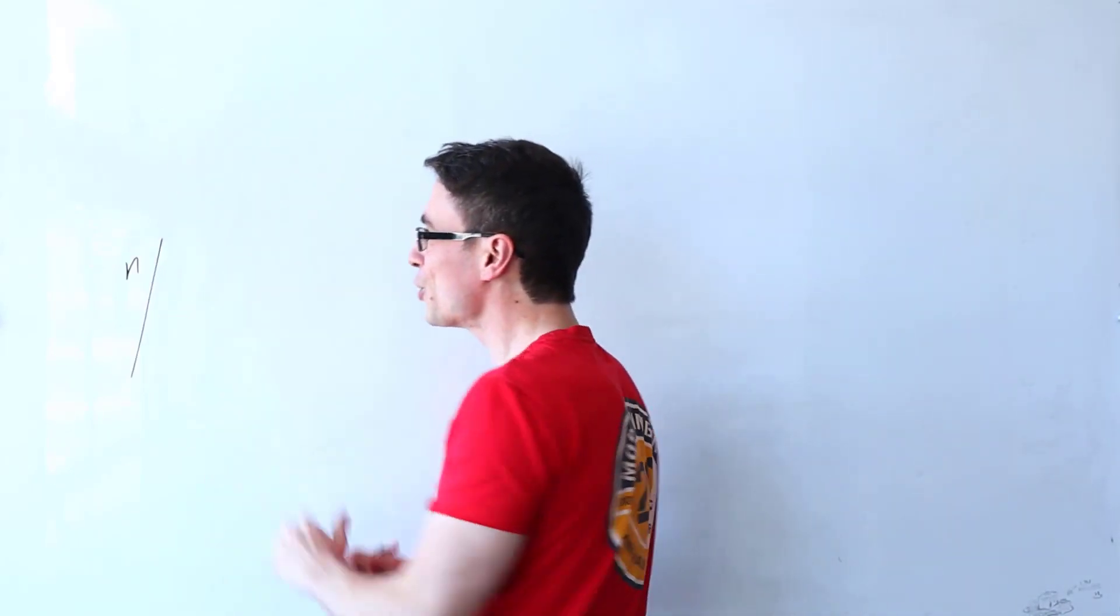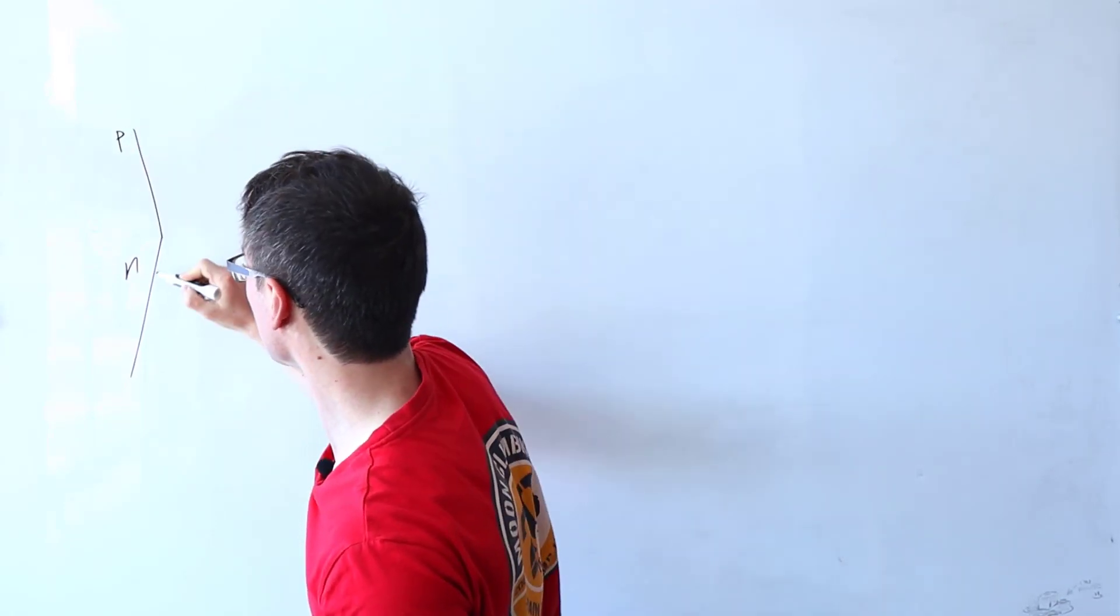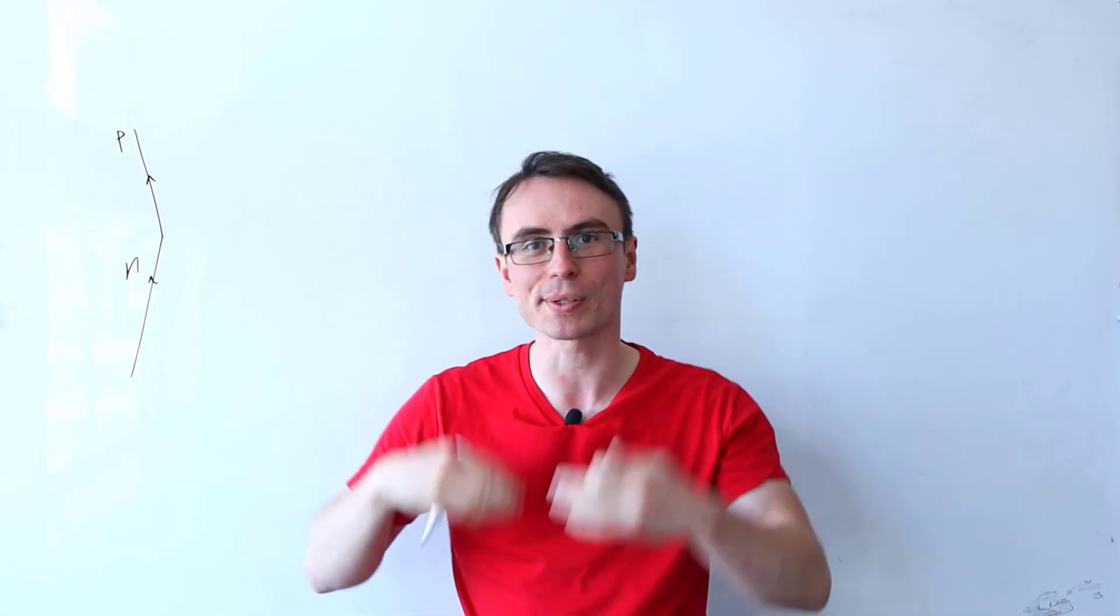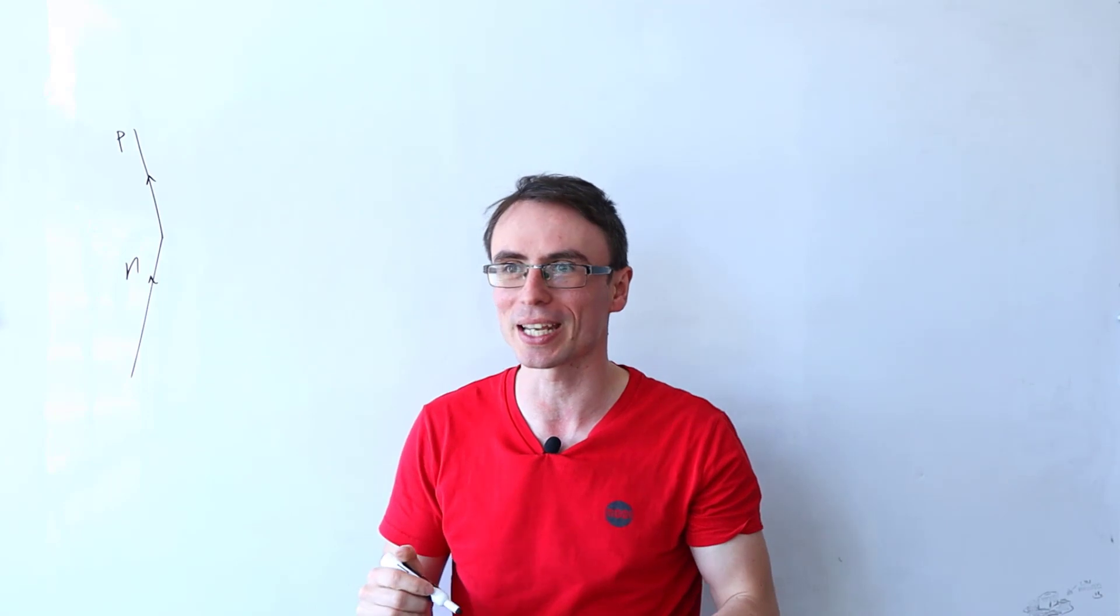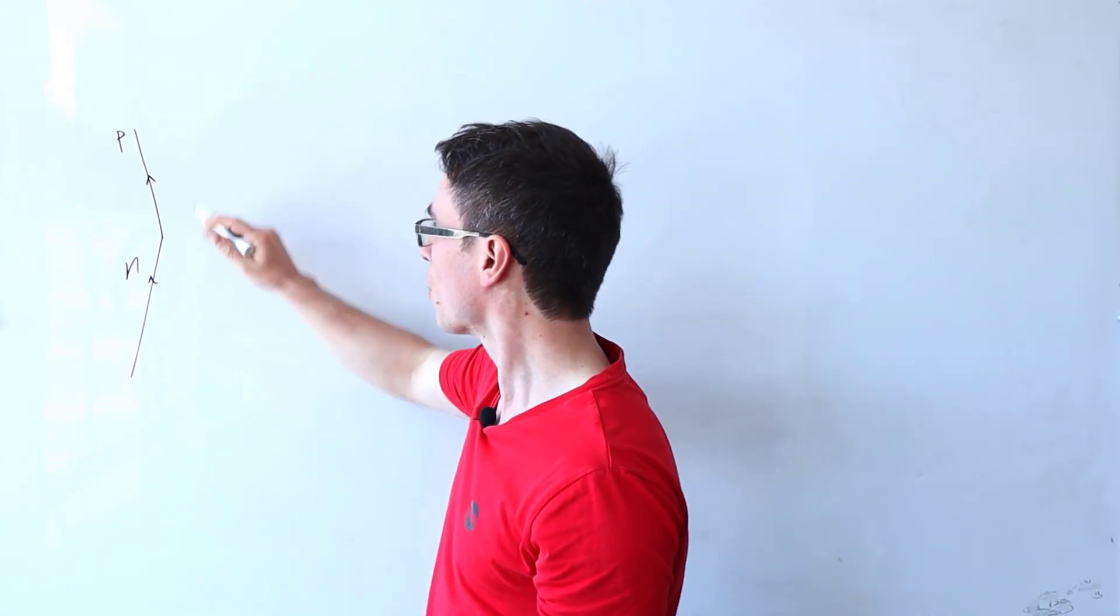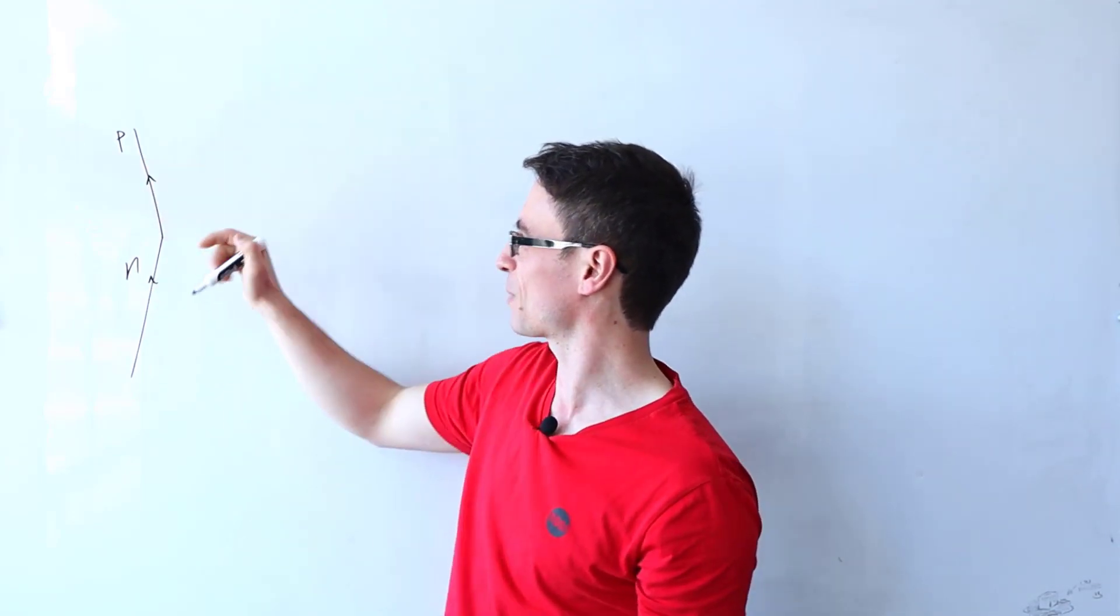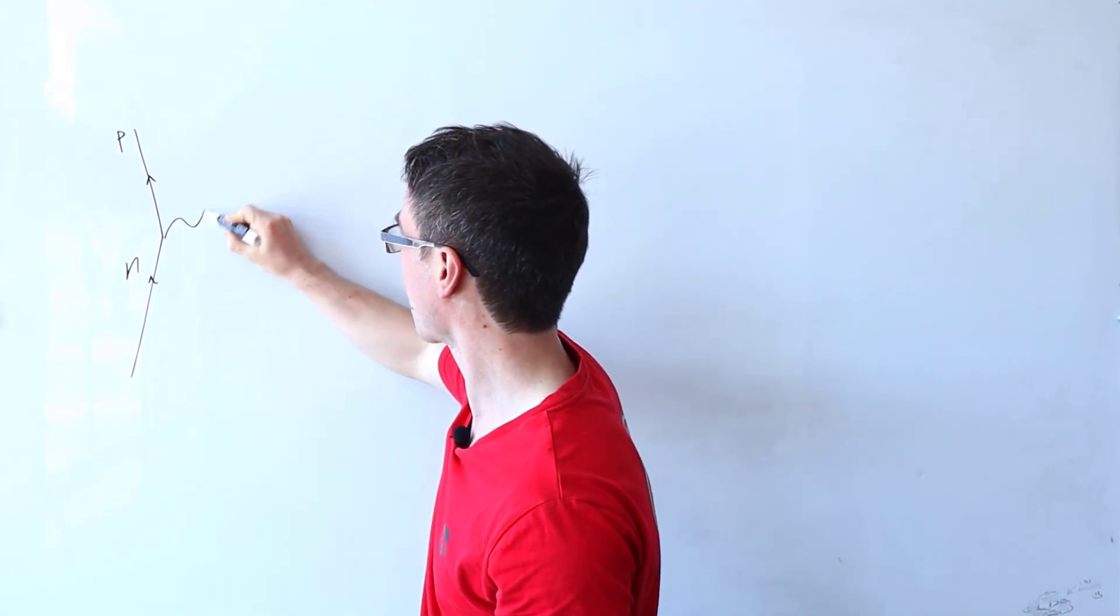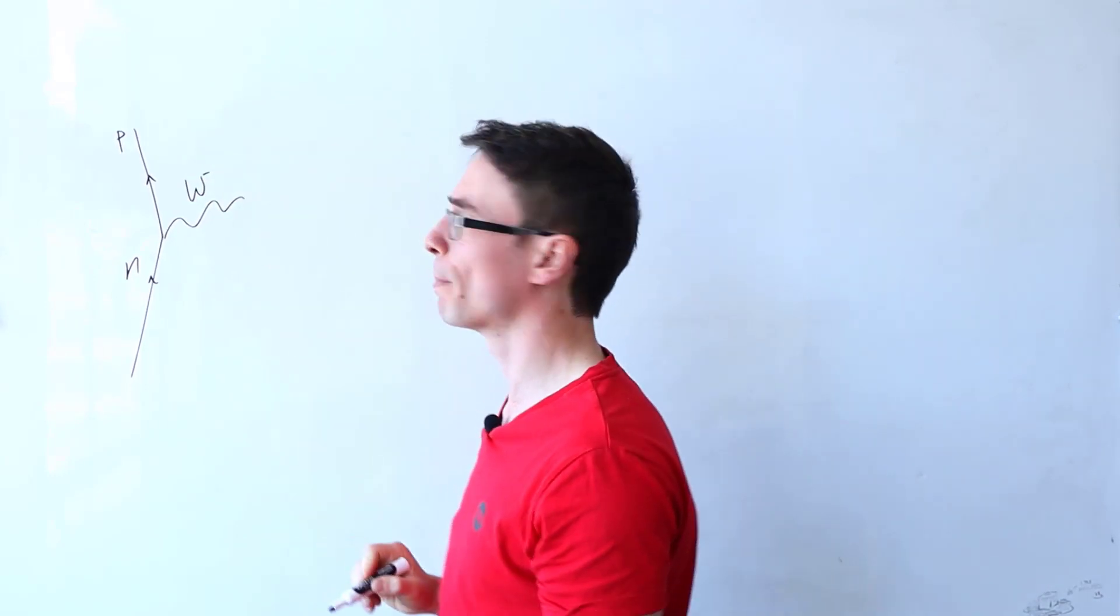We can also have a neutron that may turn into a proton. Anytime that we have some quarks changing flavor and a neutron turning into a proton or proton turning into a neutron, it is a weak interaction. So we're going to need to have something negative here because the neutron is neutral. This thing is positive. So the charge before and after should be zero. Therefore, what we're going to get is the W minus boson.